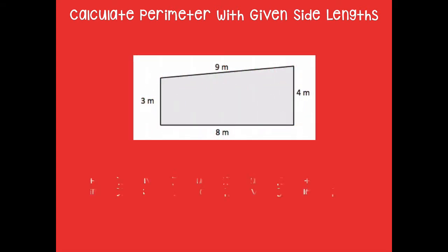Here's another shape, and I want for this time I want you guys to write and solve an equation that shows the perimeter as the sum of the given side lengths. So go ahead and write an addition sentence and solve it to find the perimeter. Go ahead and pause the video and click play when you're ready to go over it together.